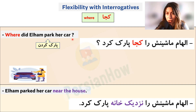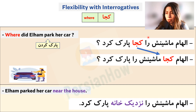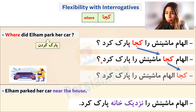The interrogative 'koja' means where. Question: where did Elham park her car? 'Elham machine-ash ra koja parkard?' We need 'ra' because you park your car — a specific object — which triggers 'ra.' Answer: Elham parked her car near the house — 'Elham machine-ash ra nazdik-e khane parkard.' 'Koja' is flexible: 'Elham koja machine-ash ra parkard?' or with more emphasis: 'koja Elham machine-ash ra parkard?'